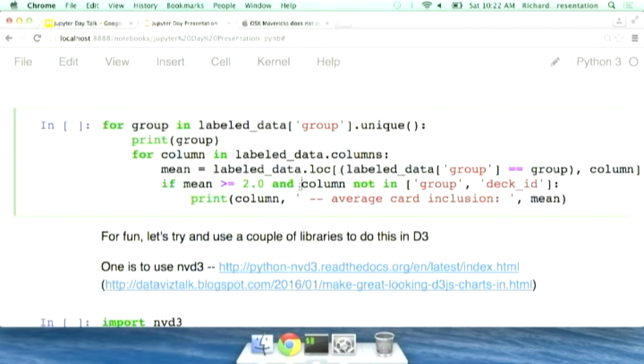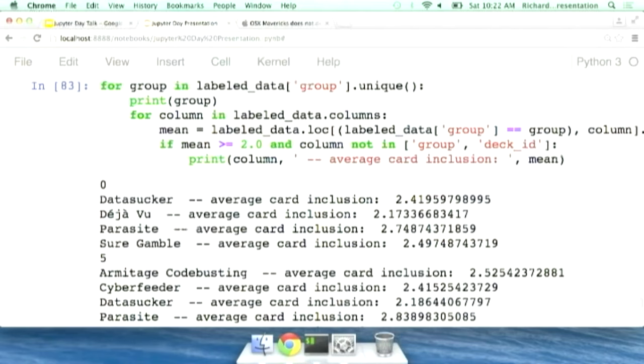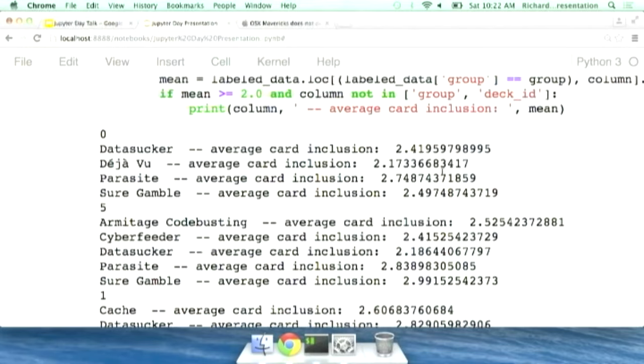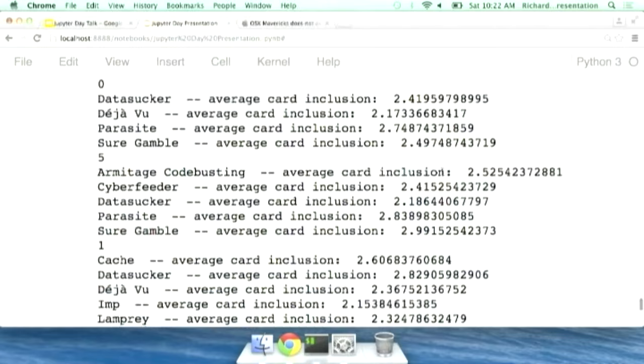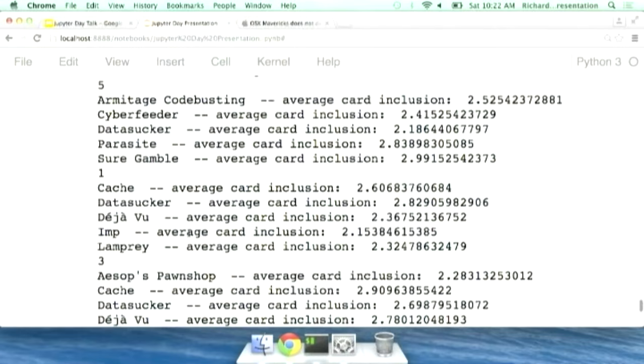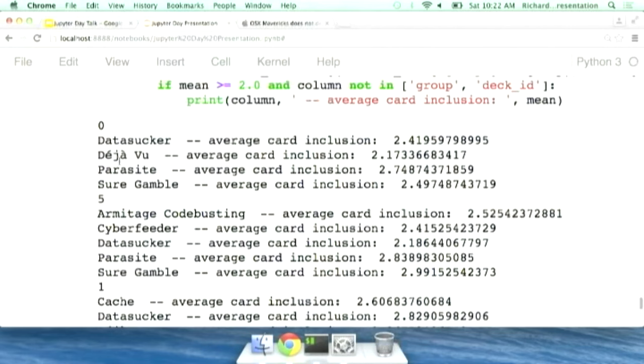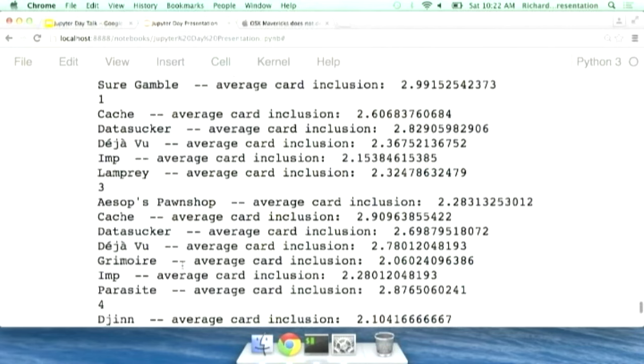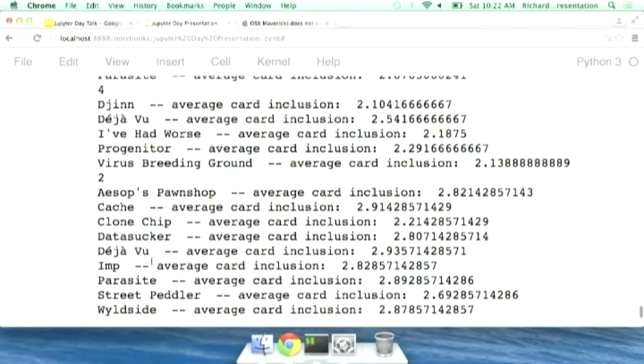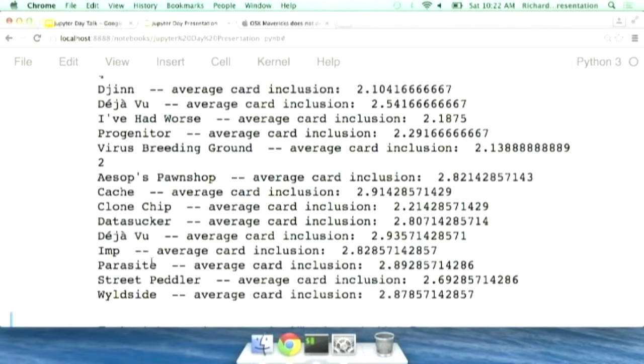And we can even kind of go through, and this will kind of tell us like, by cluster what the most kind of like, averagely seen card is. So this is like, if the average card number is, you know, over two. And yeah, so these clusters actually have different cards that show up more and more often. Some of these show up all the time. This deja vu card is kind of all over the place. But other of these are very unique. They don't show up as often. So that might actually tell us there is something here to these clusters.